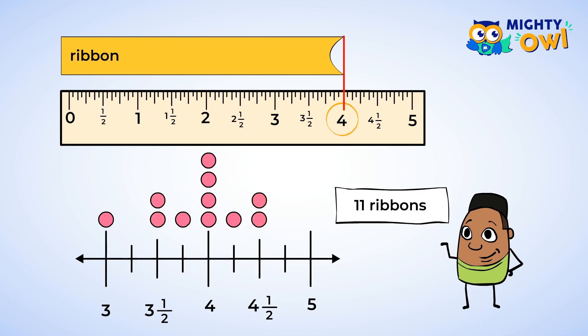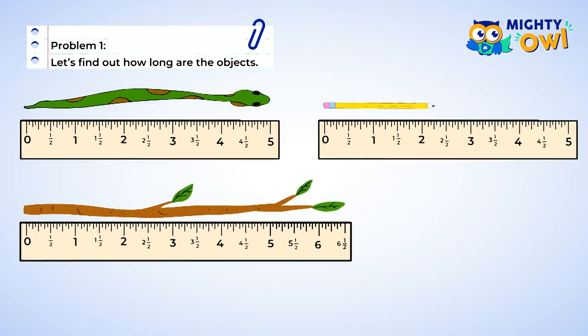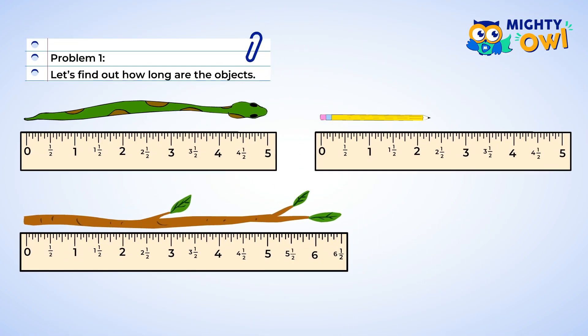Let's measure some more objects before continuing on with line plots. Wow, look at all these objects! Let's find out how long they are. The snake ends right at the five. Well, that means it's five inches long. We're getting pretty good at measuring. Slithering on to the next object. This stick is longer than six inches. And since it ends at the one-half, that means it's six and a half inches. Hey, there's my pencil! I was looking for that! And it looks like it stops at the one-fourth mark just after the two. So this means it's two and one-fourth inches long. Great job measuring!